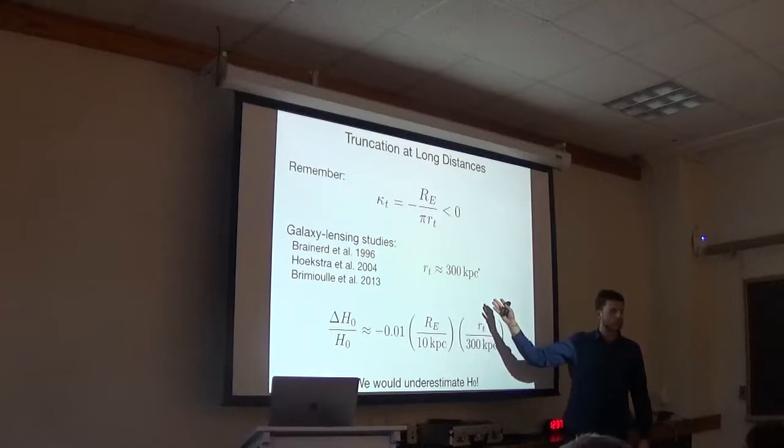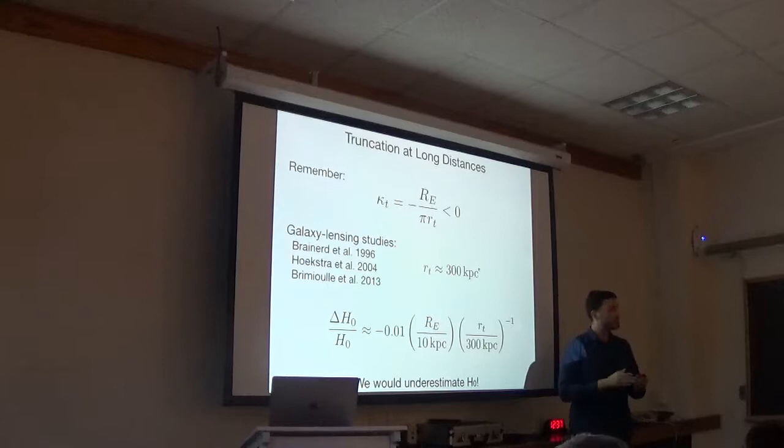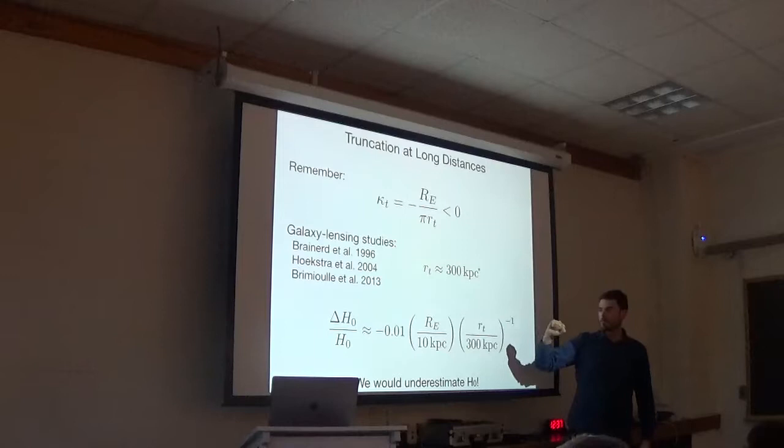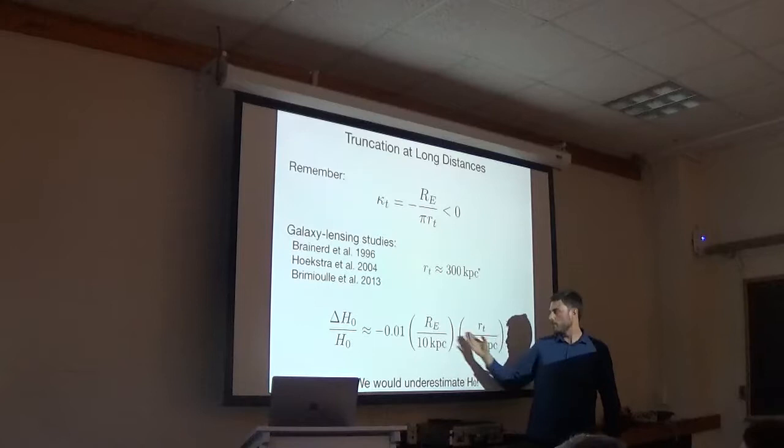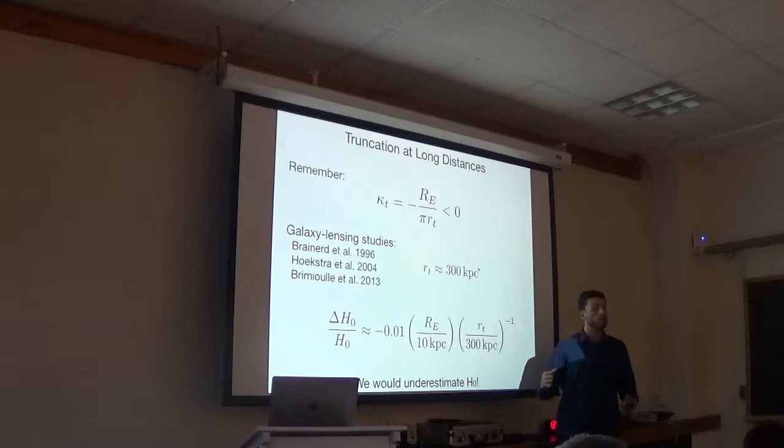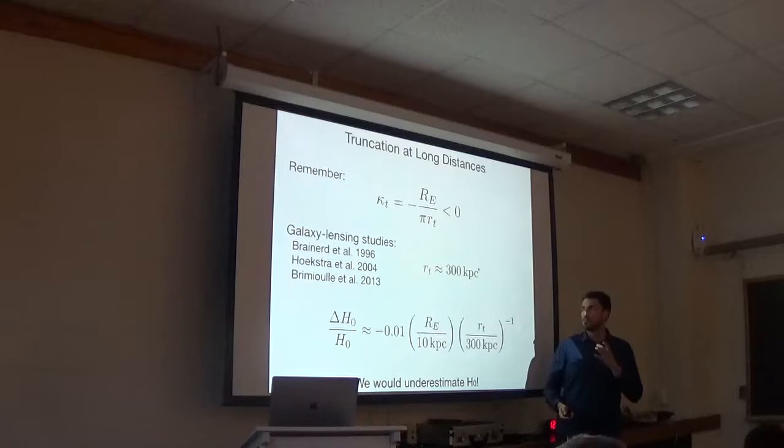And different studies have been able to look at this parameter and constrain it to be around 300 kiloparsecs. This is for red early-type galaxies which tend to be lenses. But of course, later-type galaxies have a very different RT, a factor of 2 or 3 smaller. And ideally, we'd like to know what the RT is for lens galaxies, not just red galaxies which tend to be lenses. But this gives us an idea of what the size of this effect is.